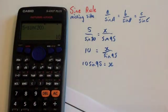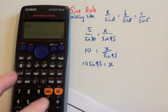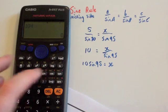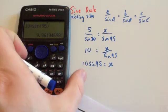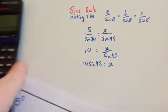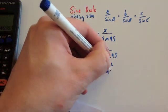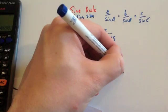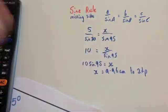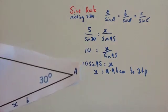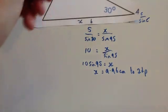We just work out what 10 times the sine of 95 is. So 10 times sin 95 equals 9.96 to two decimal places. So x equals 9.96 centimeters to two decimal places. We've used the sine rule to work out the missing side x, which is 9.96.